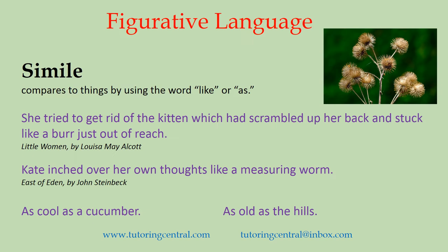Here's another simile example by John Steinbeck from East of Eden: 'Kate inched over her own thoughts like a measuring worm.' He's comparing Kate's thoughts to a measuring worm. Of course, they have very little in common literally, but we get the picture of how carefully and slowly she is reviewing her own thoughts — just like a measuring worm measuring things out. In the first example they used 'like,' and in this one also 'like.' A metaphor would not use 'as' or 'like' to join the comparisons.